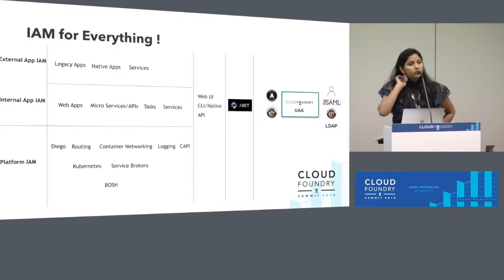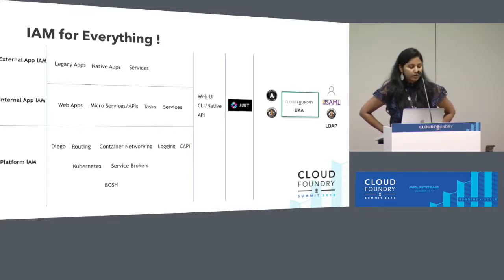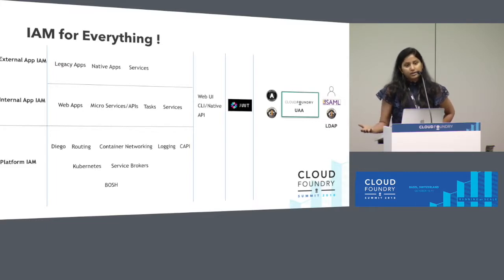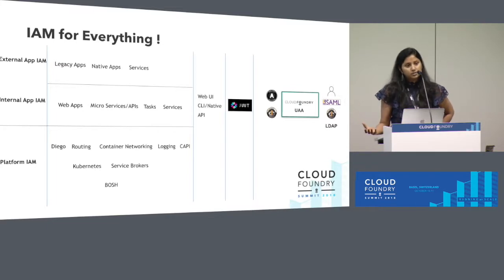A quick overview of the problems that UAA solves when it comes to the Cloud Foundry platform and for applications. UAA is an identity server — you can also refer to it as an identity proxy. In an enterprise, you have different ways in which users are authenticated and authorized, and those could be disparate systems. But UAA is able to connect to these systems in a standards-based approach and present a consistent identity to the platform and for applications on the platform.